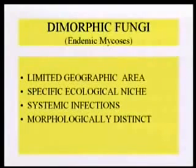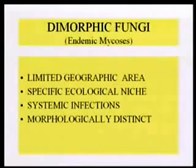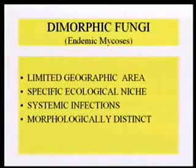These are the most important fungi, and we'll take one today. We call them all dimorphic fungi, which means 'two forms.' In nature they're in a mycelial form, and in tissue invasion of humans or animals they are in a yeast form. They're called endemic mycoses because most of them are in limited geographical areas. They all cause systemic infections and are morphologically distinct, fairly easy to identify.